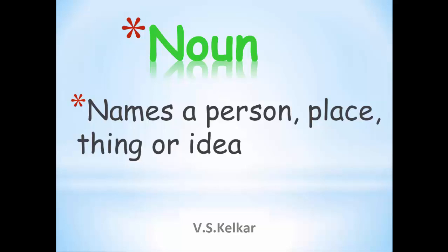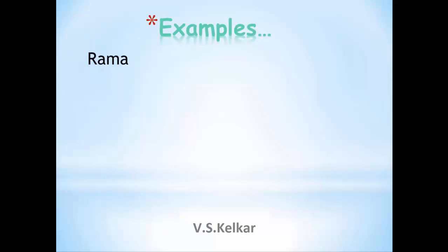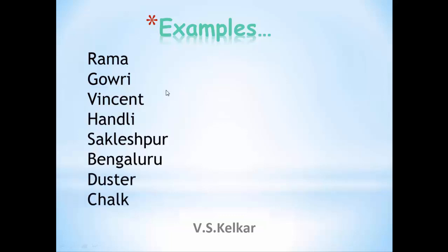Let us see some examples for nouns. Rama — name of a person. Other names include Gauri, Vincent, Hanli. And place names like Sakleshpur, Bengaluru — these are examples for places. And then duster, chalk, pen, etc. — these are examples for things.